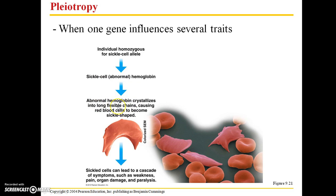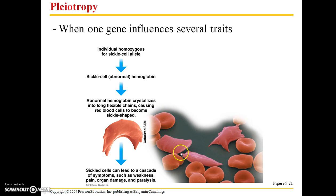This abnormal hemoglobin crystallizes into long flexible chains, which causes the red blood cells to become sickle-shaped. Normally, red blood cells are somewhat round. These sickled cells can lead to a cascade of symptoms such as weakness, pain, organ damage, and paralysis.